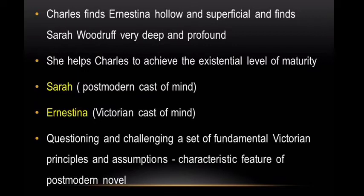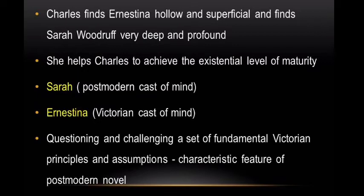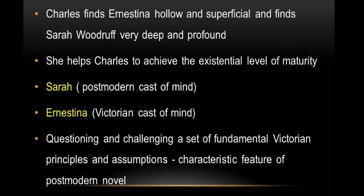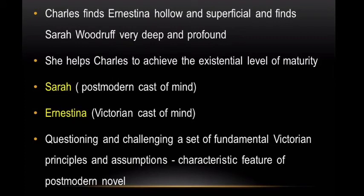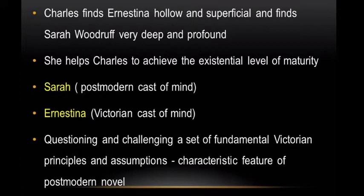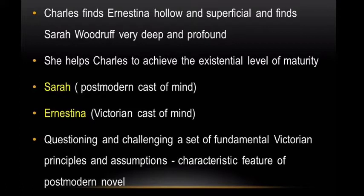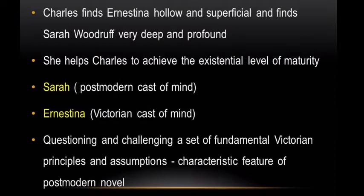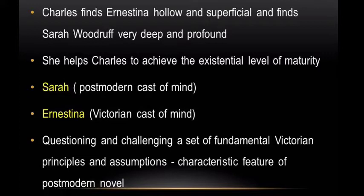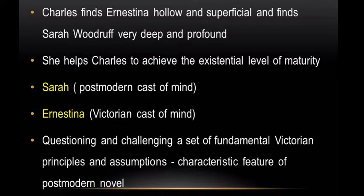But later we find that much of what people believe about her is untrue. Charles at his mental level puts Anastina and Sarah side by side and judges them. In his act of judging, he finds Anastina hollow and superficial; on the contrary, he finds Sarah Woodruff very deep and profound. It is Sarah rather than Anastina who helps Charles achieve the existential level of maturity. By putting Sarah as an embodiment of a postmodern cast of mind against Anastina as a representative of a Victorian cast of mind, John Fowles is questioning and challenging fundamental Victorian principles and assumptions on the nature of fiction.